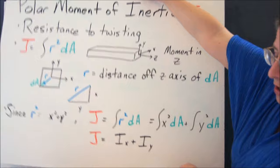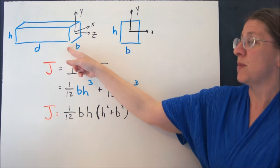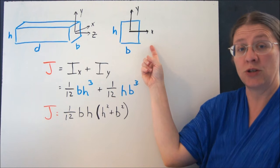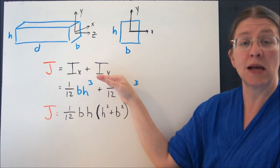And if you look at how that works for a rectangular beam, here's my beam, here's my cross-section with x and y. J is Ix plus Iy.